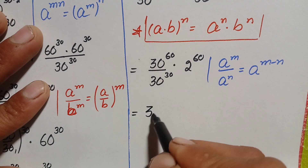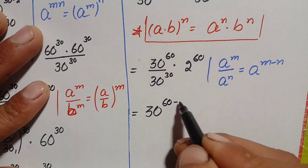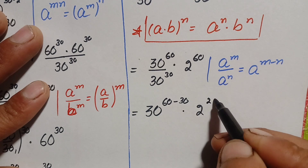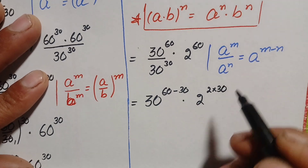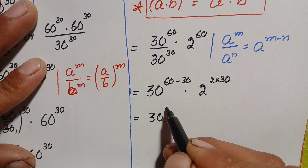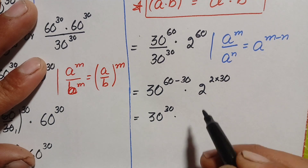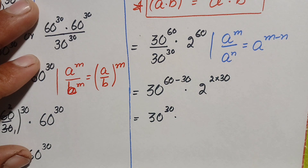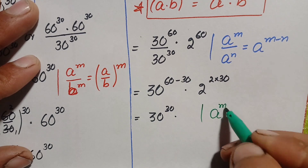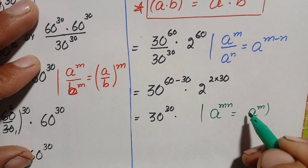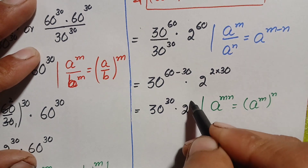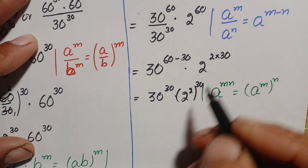This gives us 30 raised to power (60 minus 30), which is 30 raised to power 30, times 2 raised to power 60. We can write 60 as 2 times 30, so 2 raised to power 60 becomes 2 raised to power (2 times 30). Applying the identity a raised to power (m times n) equals (a raised to power m) all raised to power n, this becomes 2 raised to power 2, all raised to power 30.